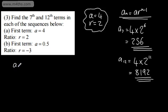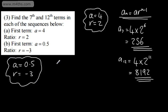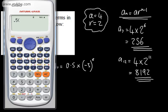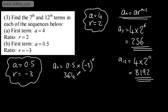Let's look at the next one. We've got a is equal to 0.5 or 1 half, and the ratio is going to be equal to negative 3. So using these values, the 7th term, a sub 7, is going to be 0.5, and we're going to multiply this by negative 3 to the power of n minus 1, which is 6. In the calculator, 0.5 times negative 3 raised to the power of 6 — that's going to give me 364.5.